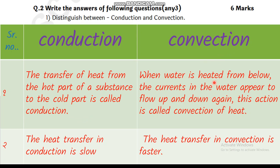What is meant by convection? When water is heated from below, the currents you can see in the water appear to flow up and then down again. This action is called convection of heat. The heat transfer in conduction is very slow, but heat transfer in convection is comparatively faster than conduction.